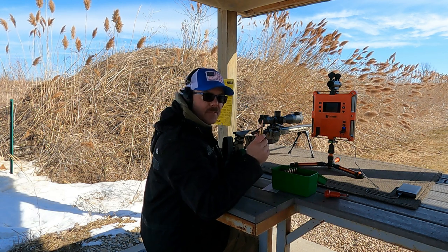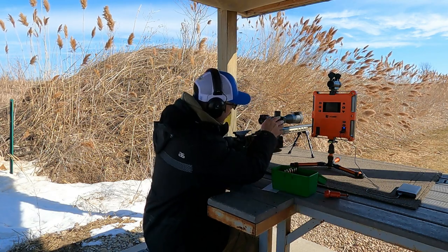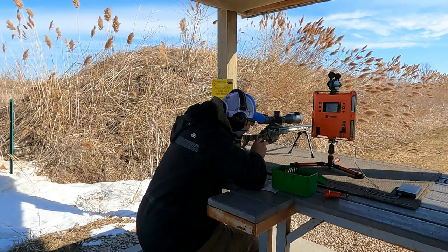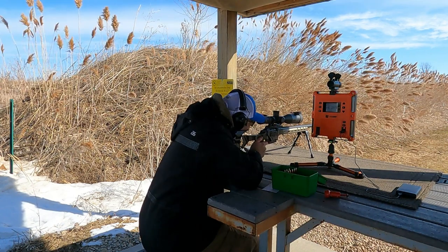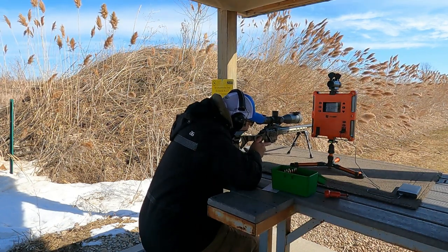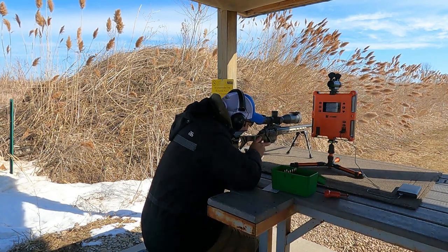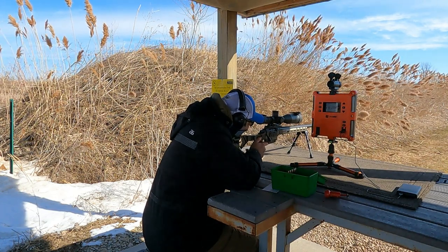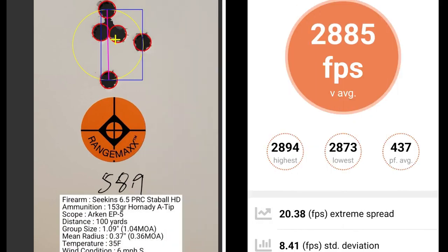This five shot group is with 58.9 grains of powder. I had a group size of 1.04 MOA with a mean radius of 0.36 MOA. The average muzzle velocity was 2885 with an extreme spread of 20.38 and a standard deviation of 8.41.